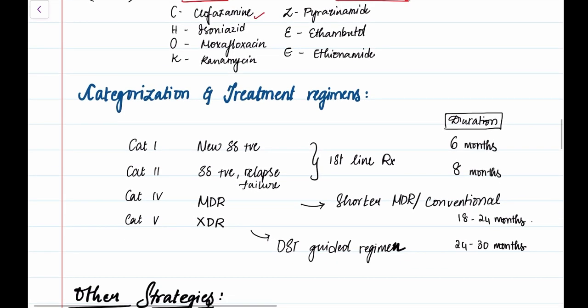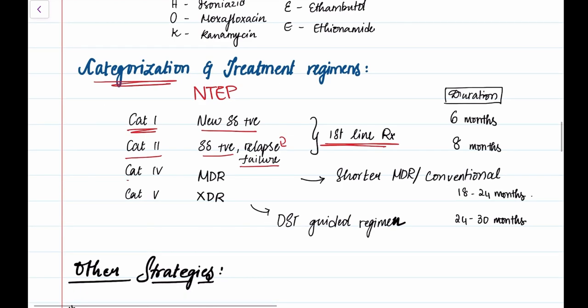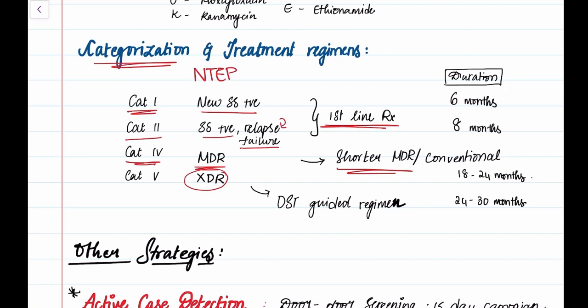It's important to know the categorization of treatment regimens under NTEP. Category one is new cases, that is new sputum positive. Category two is previously treated with treatment failure and relapse. For both these, we give first line treatment with varied duration. Category four is multi-drug resistant TB where we give shorter MDR. Category five is extensive drug resistant TB where we give drug sensitivity guided regimen.